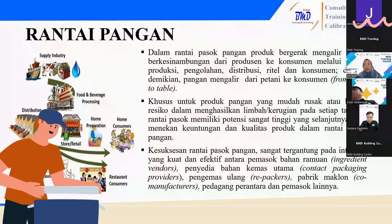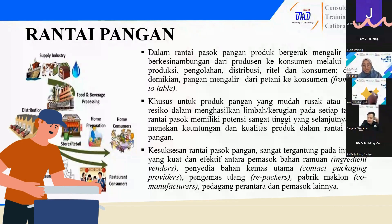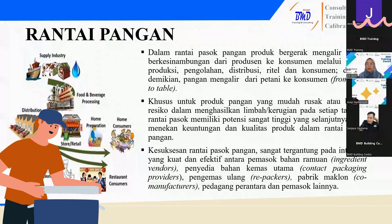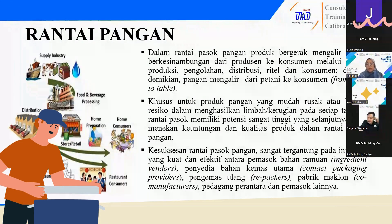Penyetokan tadi, selain adanya kerusakan atau kebusukan, untuk produk kering juga harus diperhatikan expired date-nya. Itu yang kadang masih suka kelewat untuk memperhatikan masa expired di kemasan untuk penyetokan bahan-bahan makanan yang kering. Selain itu juga harus diperhatikan kemasannya untuk menghindari kerusakan atau kebusukan. Kesesuaian rantai pasok pangan sangat tergantung pada interaksi yang kuat dan efektif antara pemasok bahan ramuan, penyedia bahan kemas utama, pengemas ulang, pabrik maklon, pedagang perantara, dan pemasok lainnya.